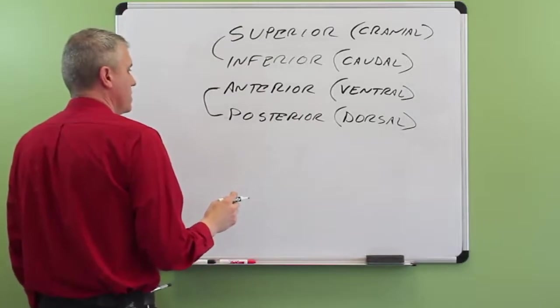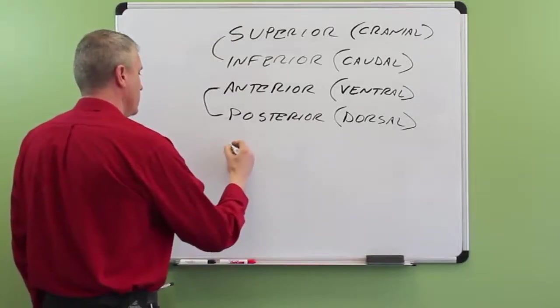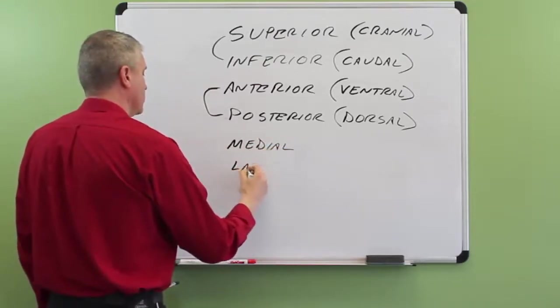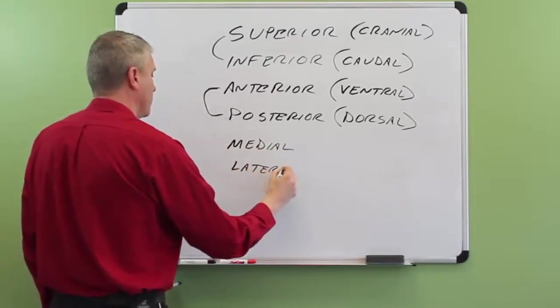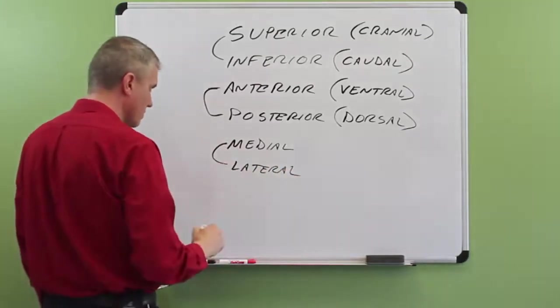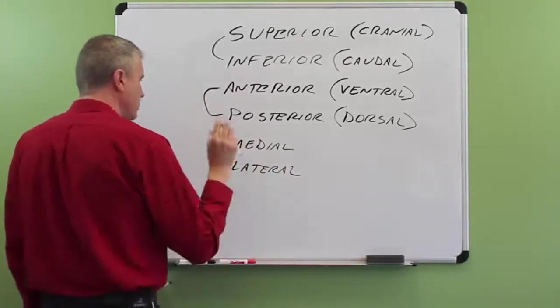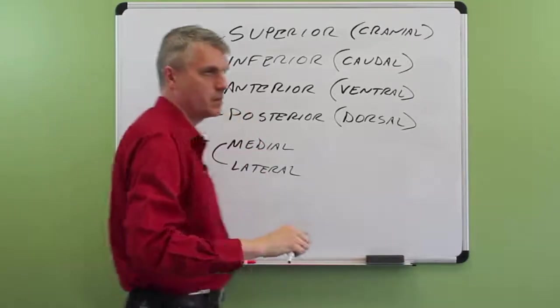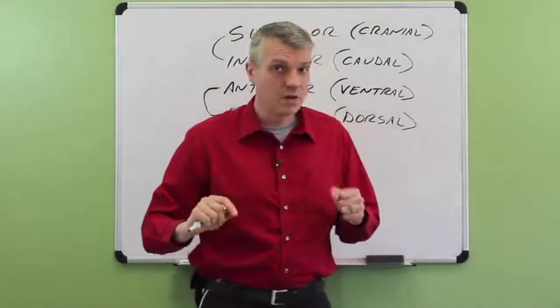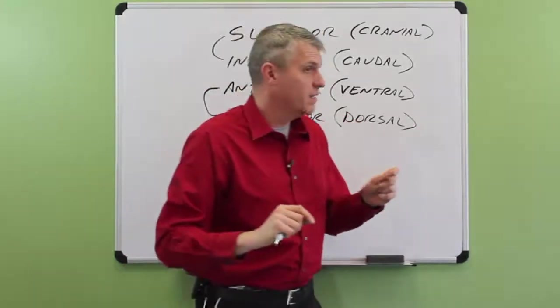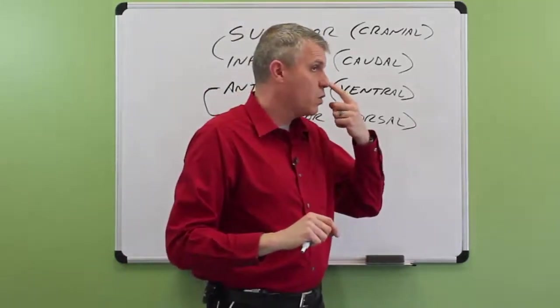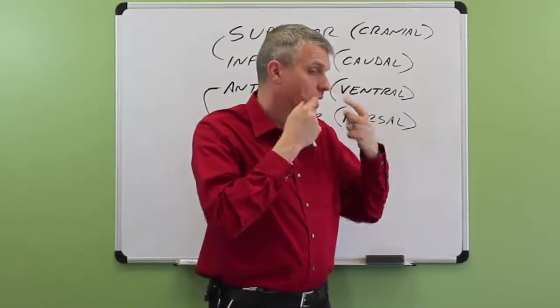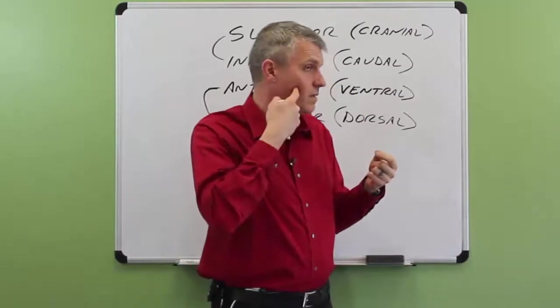Okay, so we got superior, inferior, anterior, posterior. Let's do medial and lateral. Actually, before I move on to medial and lateral, I didn't actually show you what anterior and posterior mean. So, let's play with anterior and posterior for a second. If I turn sideways, my nose is anterior to my cheek. And my cheek is posterior to my nose.